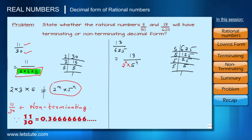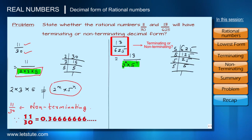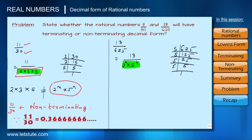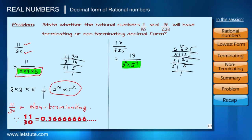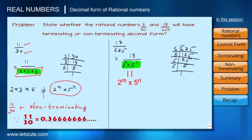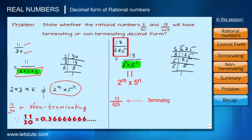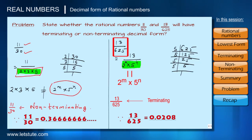Since the denominator of 13/625 equals 2⁰ × 5⁴, it is of the form 2^m × 5^n, so the fraction 13/625 is terminating. We now understand how to identify whether a number is terminating or non-terminating without performing long division.